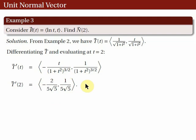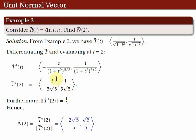Next, we solve for the norm of T'(2), and the norm is equal to 1/5. So from the definition, N(2) — the unit normal vector at t = 2 — is equal to the first component over the norm, comma, the second component over the norm.